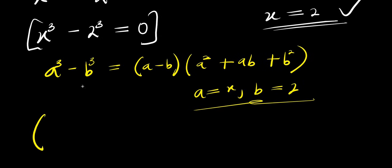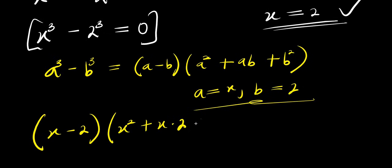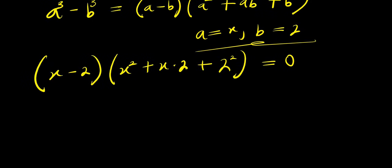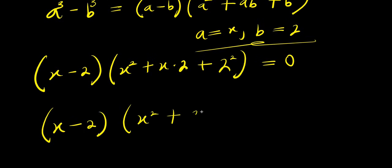So let's substitute this for a and b right here. That means we are simply going to have: this would be x minus 2 times x squared plus x times 2 plus 2 squared, and this equals 0. So from here, x minus 2 times x squared plus 2x plus 4 equals 0, since 2 squared is 4.